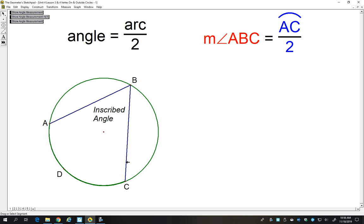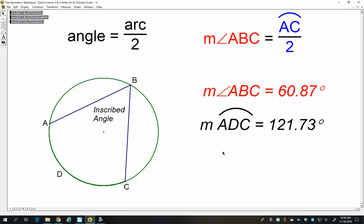So let me measure angle ABC, close to 61 degrees. And I'll measure that arc. As you can see, normally we'd name it just AC, but in this program it needs to grab a third point to measure it. Close to 122. And now I'm going to divide that arc by two. And you can see it's the same as the measure of the angle.